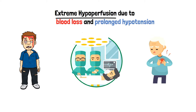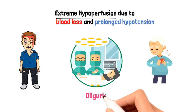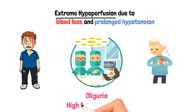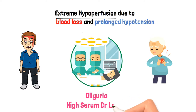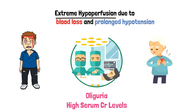What is common in all these instances is that if the renal tubular cells are damaged, there is no proper filtration happening in the kidney. Therefore, these patients will present with oliguria, or decreased passing of urine, and since they are not passing out enough urine, they will have a high serum creatinine level.